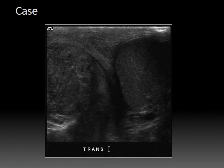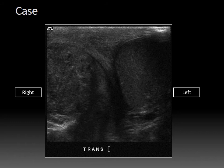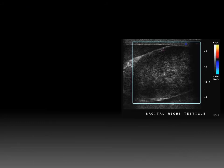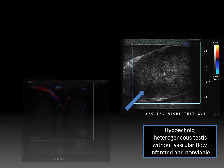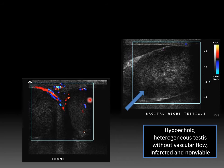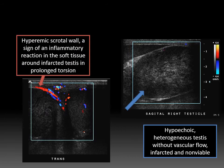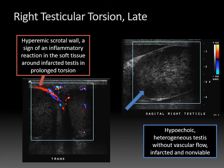This is a transverse image showing both the right and left testicles. The right testicle is markedly heterogeneous on grayscale images. With color Doppler, there is absolutely no intratesticular vascular flow. Given that the testis is heterogeneously hypoechoic with no flow, this is consistent with an infarcted non-viable testis — this testis will likely need orchiectomy. The left testis has normal vascular flow. There is a peripheral curvilinear region of hyperemia within the scrotal wall, an inflammatory reaction sometimes seen in the soft tissue in the setting of prolonged torsion with an infarcted testis — typical for late testicular torsion. With early torsion, you often have no grayscale changes and just loss of vascular flow, and those patients need emergent treatment because the testis can be salvaged.